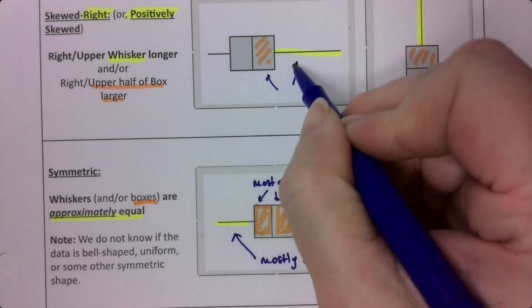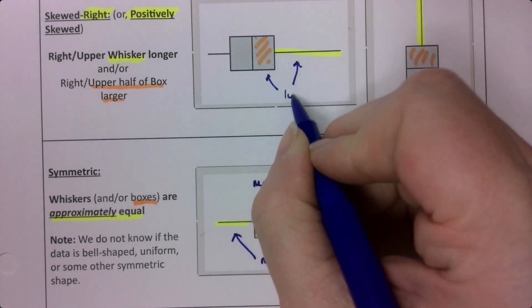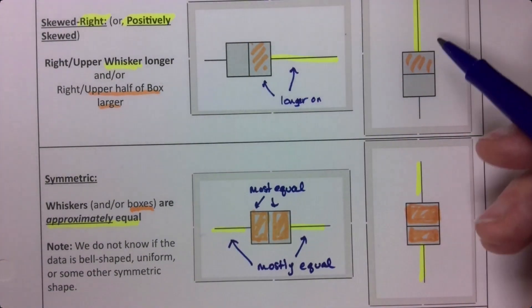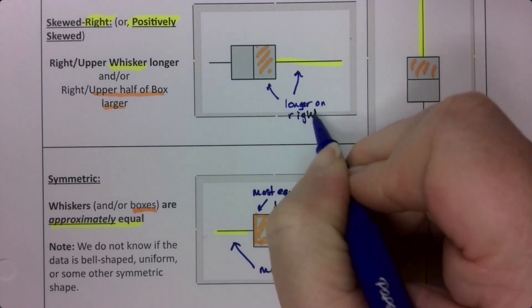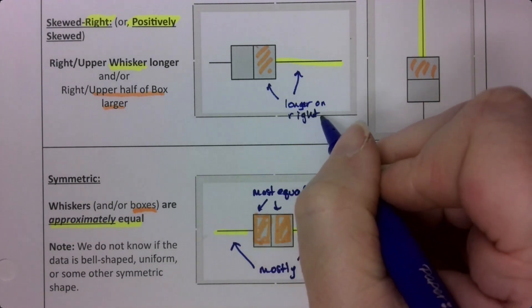If it's skewed right, one or the other of these will be longer. So longer on the right or the positive side, the high side. On the right. Particularly the whisker. The whisker is kind of the more dominant of the two. But not always.